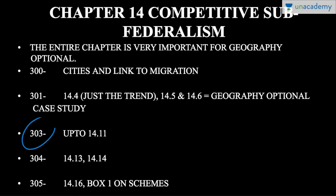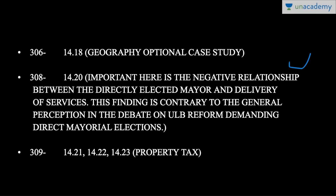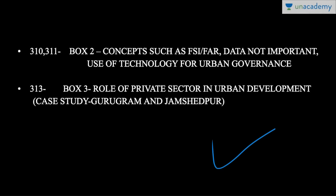On page 303, read up to paragraph 14.11. On page 304, read paragraphs 14.13 and 14.14. On page 305, read paragraph 14.16 and Box 1 on various schemes. On page 306, read paragraph 14.18 — a Geography optional case study. Paragraph 14.20 on page 308 is very very important: it reveals a negative relationship between the directly elected mayor and delivery of services. This finding is contrary to the general perception in the debate on urban local body reforms demanding direct mayoral elections — you can quote this at various places.